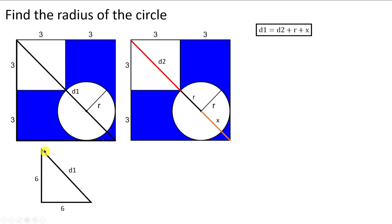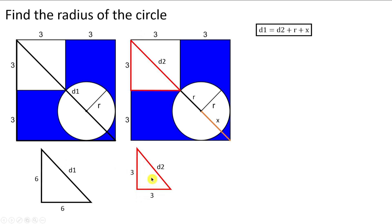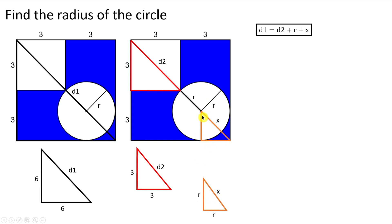To solve this equation, note that in the first figure we have a right triangle with sides 6 and 6 and hypotenuse d1. We can use the Pythagorean theorem. Similarly, we use the Pythagorean theorem to find d2, with a right triangle of side 3 and hypotenuse d2. We can also find x using a right triangle where both legs equal the radius r.